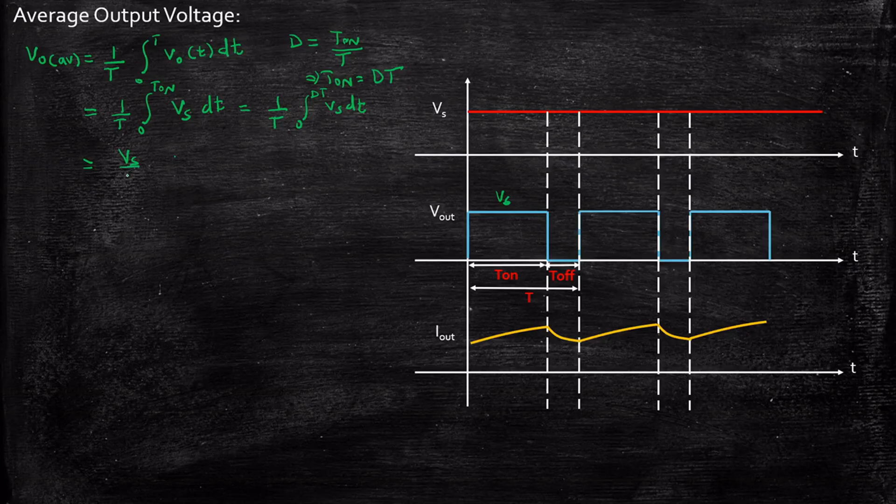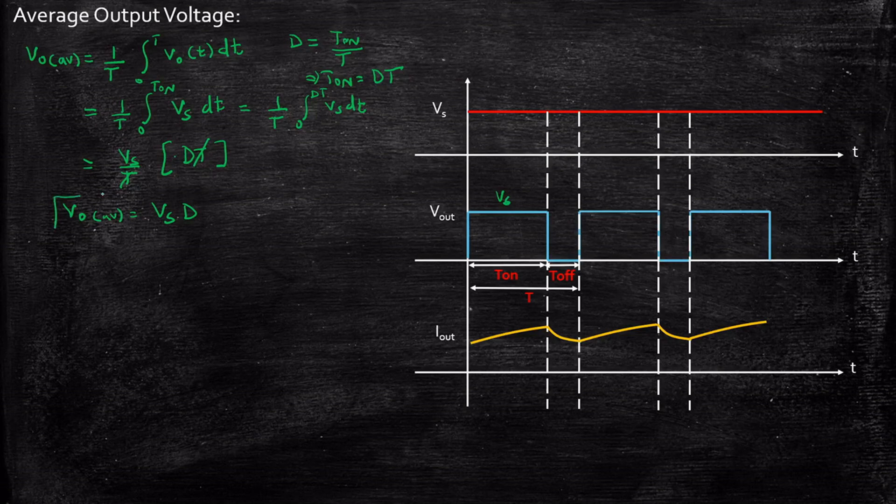Now, we have Vs. We can be taking it outside. Vs by T. That is, integration of 1 is nothing but T in this case. And substituting the lower and upper limits, you'll be getting DT. T and T will be cancelled. So, Vout average is nothing but Vs times D. Vout average largely depends on the duty cycle that we are selecting. Basically, it depends on the ratio of Ton by the total time period. That is a very important expression.